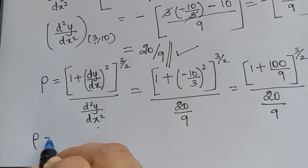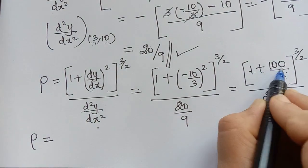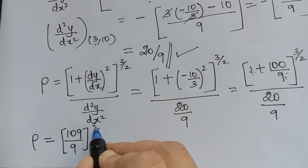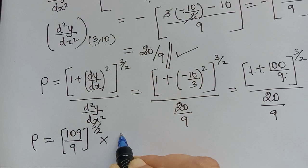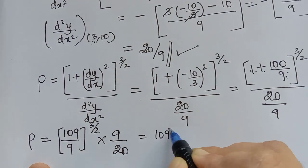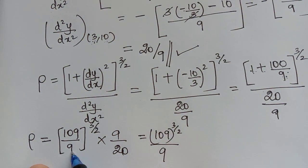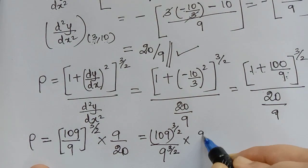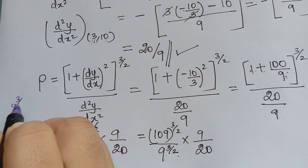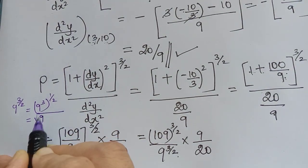Simplifying: 1 + 100/9 = (9 + 100)/9 = 109/9. So rho = (109/9)^(3/2) ÷ (20/9) = (109/9)^(3/2) × (9/20). This gives us 109^(3/2) / (9^(3/2)) × (9/20). Now we need to compute 9^(3/2): it equals 9^(3/2) = (9³)^(1/2) = √729.